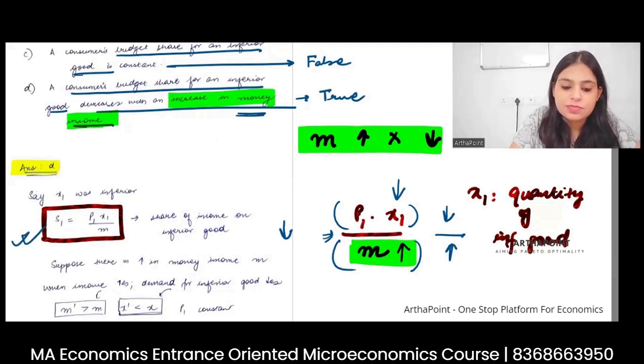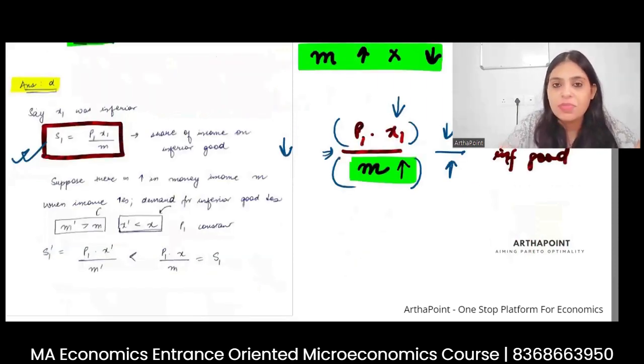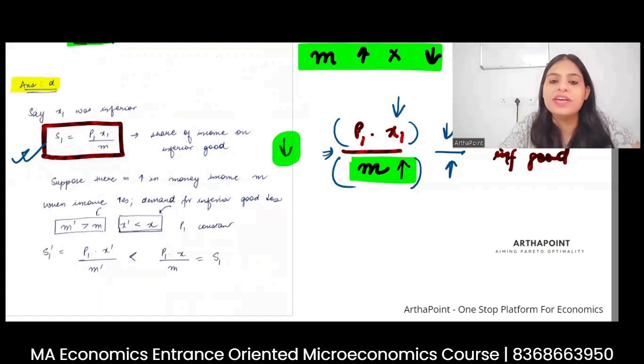So this is what I have done. When there is increase in income, overall the fraction is decreasing. So the share on inferior good is decreasing. So the answer to this question is D.